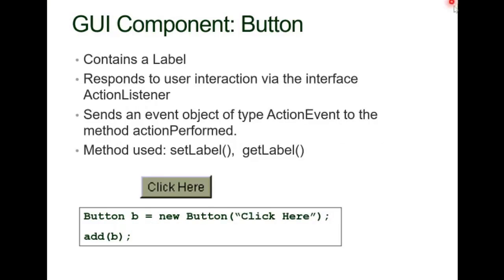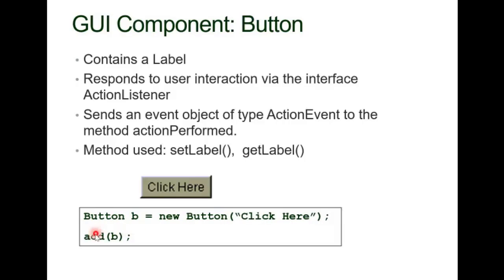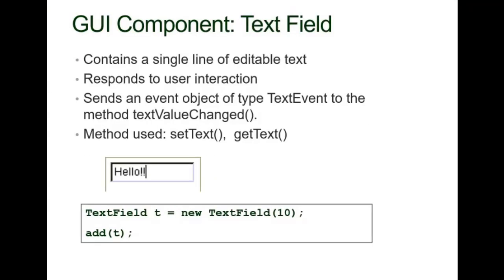You can create a Label object and put text like 'Welcome', then add it at a specific location in the layout — for example, at the North location. A Button contains a label and responds to user interactions via the ActionListener interface. It sends an event object of type ActionEvent to the method actionPerformed(). The methods used are setLabel() and getLabel(). You create a Button, add it, and it displays on screen.